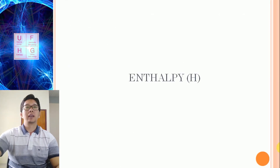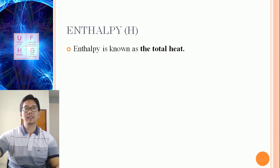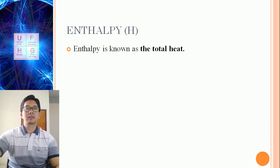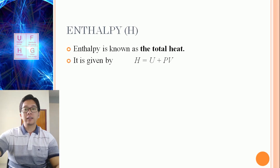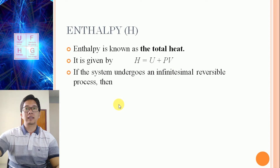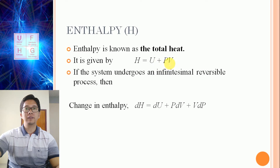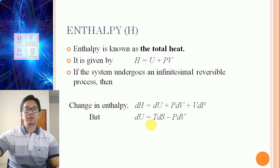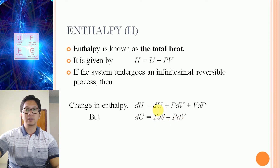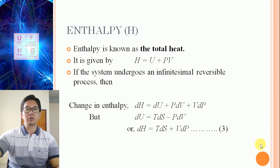Now we shall go to enthalpy. Enthalpy is known as the total heat content, given by H equals internal energy plus the product of pressure into volume. If the system undergoes an infinitesimal reversible process, then DH equals DU plus PDV plus VDP. Substituting DU equals TDS minus PDV, the PDV terms cancel, giving DH equal to TDS plus VDP. This is equation 3.